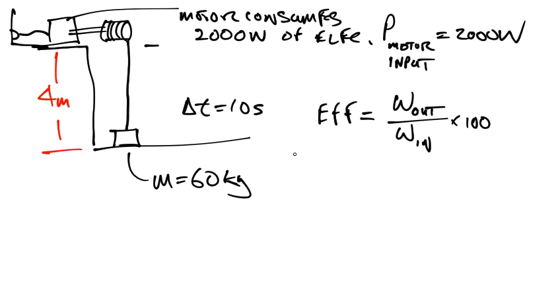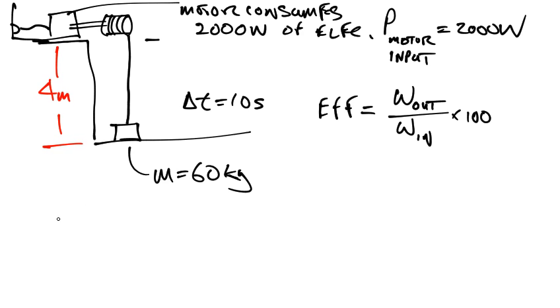The question is, what is the work output? Well, the work output is how much work did the motor do in lifting the mass? So in that case, it is the change in the gravitational potential energy of the mass that is equal to the work out.